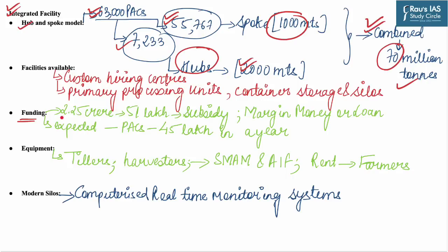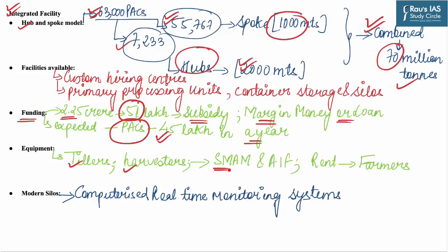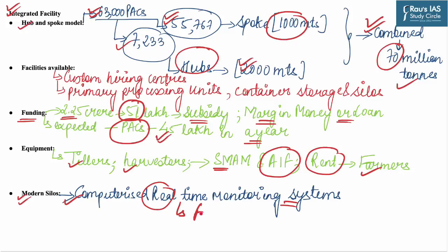Regarding funding, out of Rs 2.25 crore, Rs 51 lakh will come from subsidy and the rest as margin money or loan. It is expected that PACS will earn Rs 45 lakh per year. PACS will also purchase equipment like tillers and harvesters under government schemes such as the Sub-Mission on Agricultural Mechanization and the Agricultural Infrastructure Fund. These will be rented to farmers. The new plan also includes modern silos with computerized real-time monitoring systems, which will be rented out to the Food Corporation of India and other private agencies.